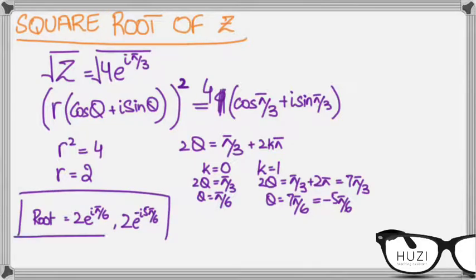So this is how you calculate the square root of a number using the exponential form and a bit of De Moivre's theorem. Now, if you had to find the cube root now, all you had to do was set k equals to 2 and find the third argument.